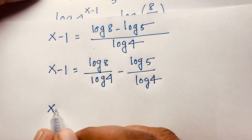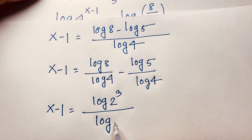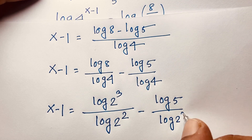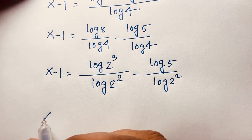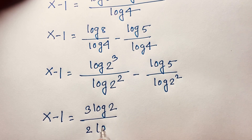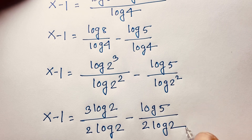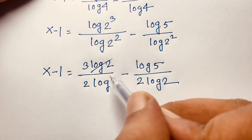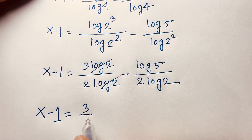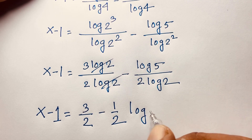Now, log 8 equals log 2 to the power 3, and log 4 equals log 2 to the power 2. So x minus 1 equals 3 log 2 over 2 log 2, minus log 5 over 2 log 2. The log 2 terms cancel in the first fraction, giving 3 over 2. The second term becomes 1 over 2 times log 5 base 2.